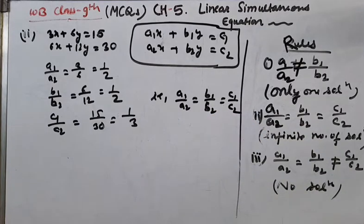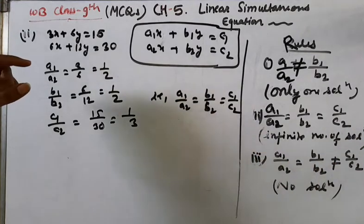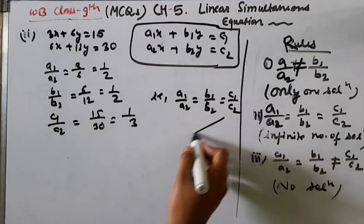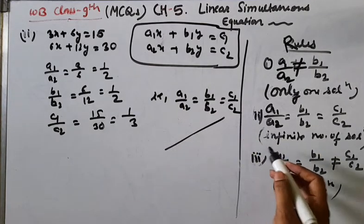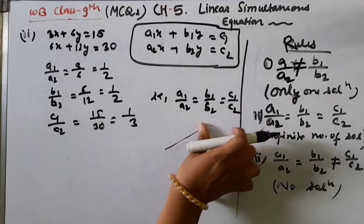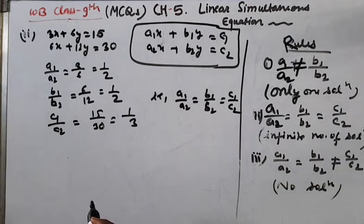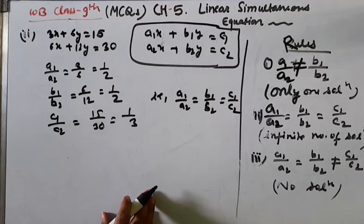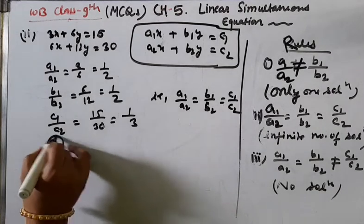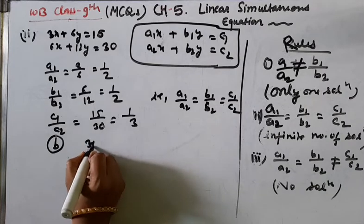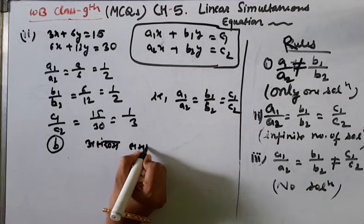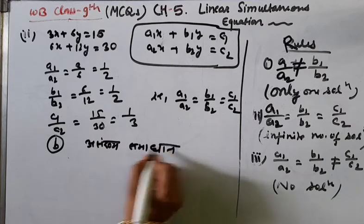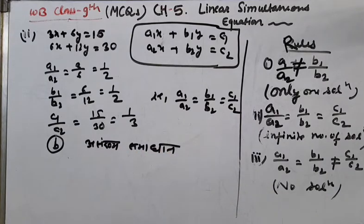When all the ratios are equal, if you plot it in the graph, you will get only one line. That means you get an infinite number of solutions. So option B is the right answer — infinite solutions, or asankhya samadhan.